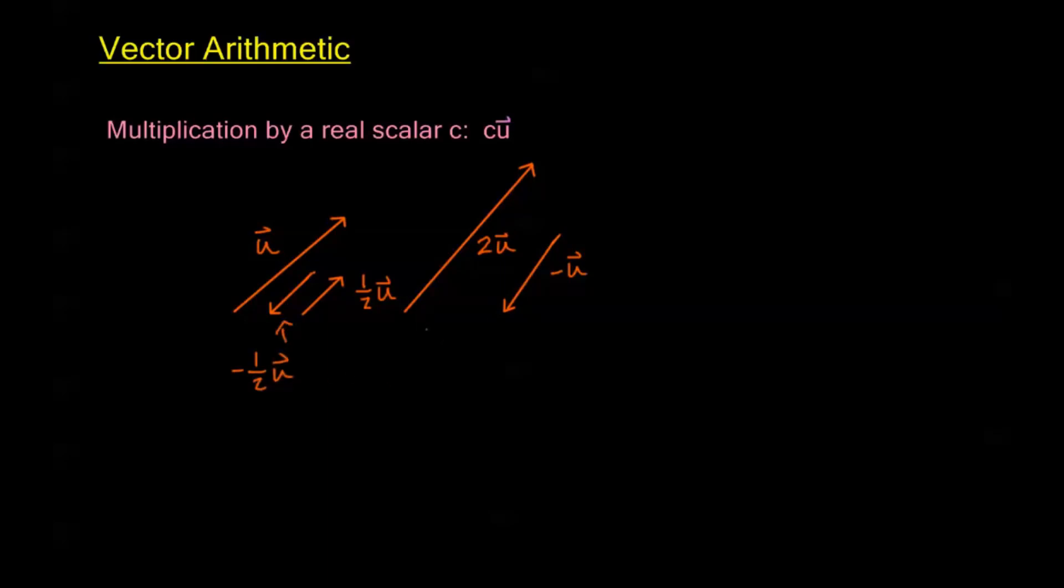So when we multiply by different real scalars, what that real scalar does is it affects the magnitude, and if it's a negative scalar, it turns it into a complete opposite direction or 180 degree change in that direction of the vector.